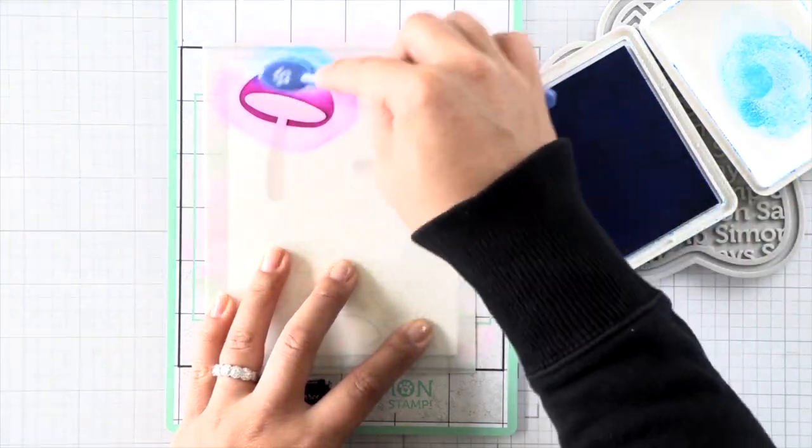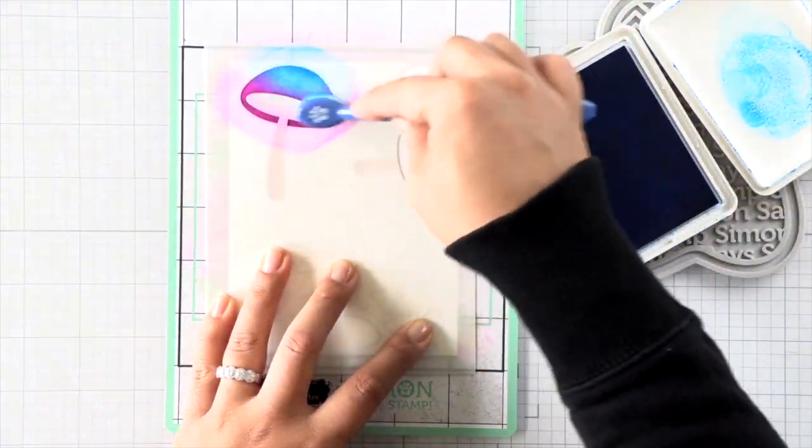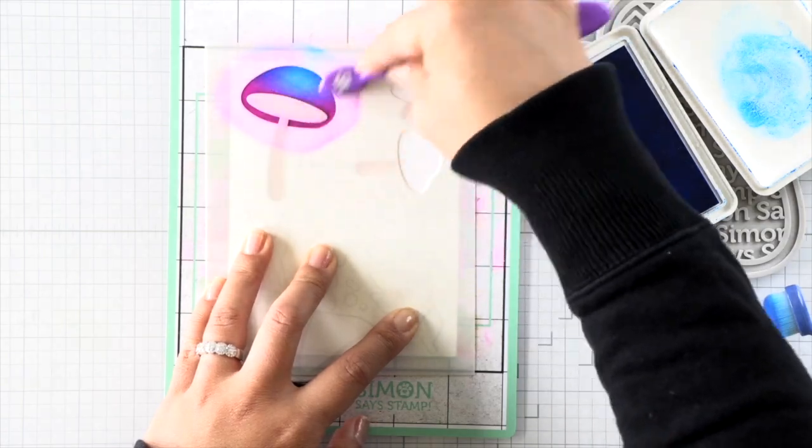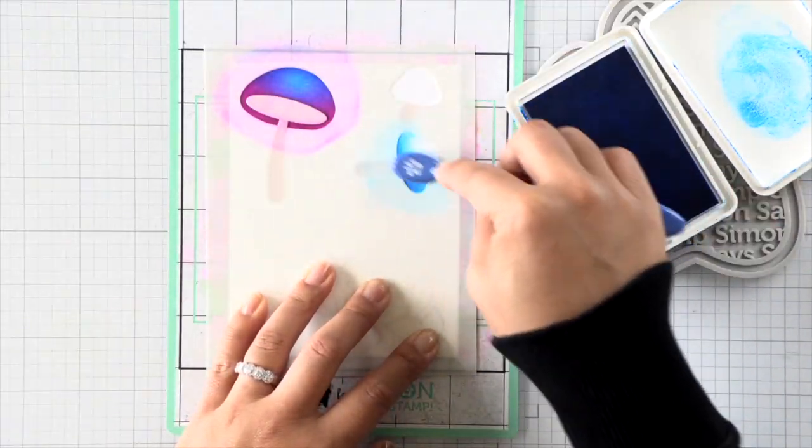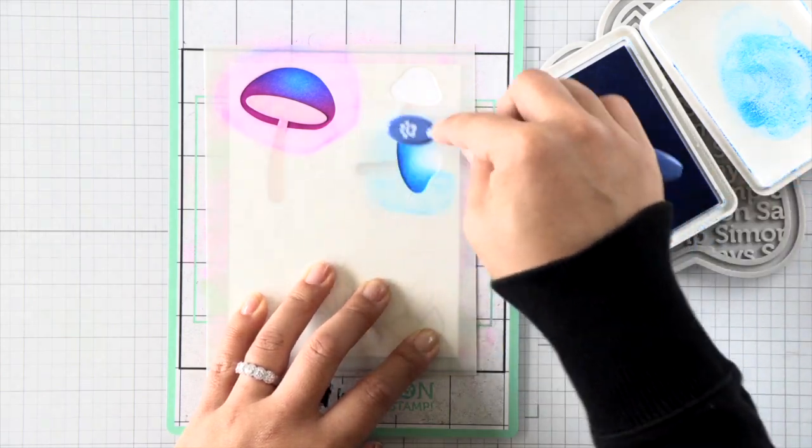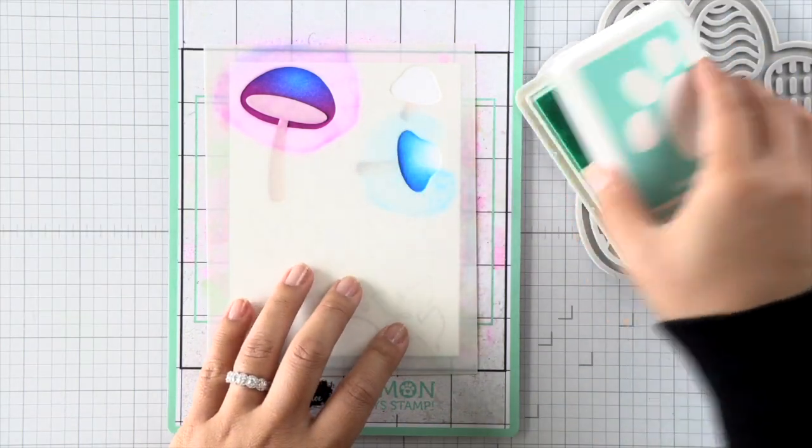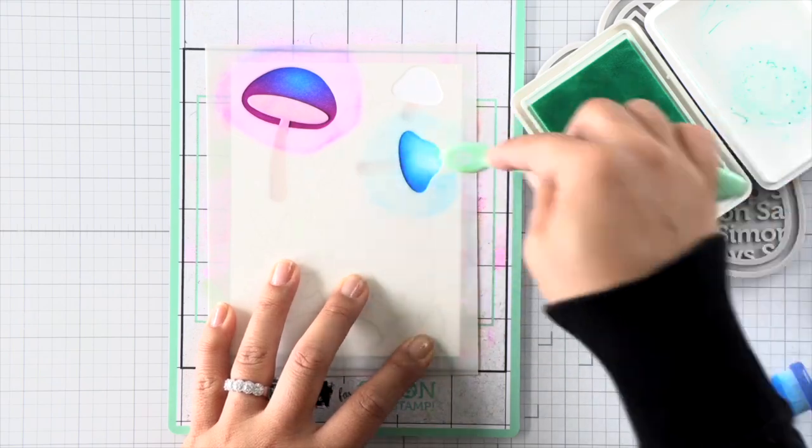It's really important here to select colors that blend well together. So adjacent or complementary colors on the color wheel. Then on to the second mushroom, I'm going to use that same cadet blue and then ink blend it with seafoam ink. So I have a blue teal mushroom here.